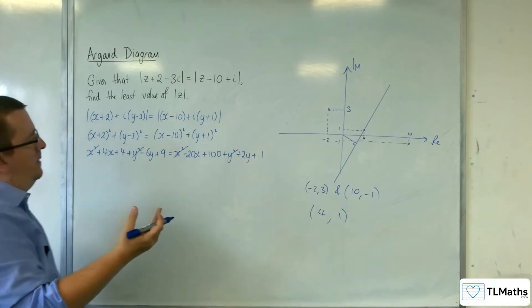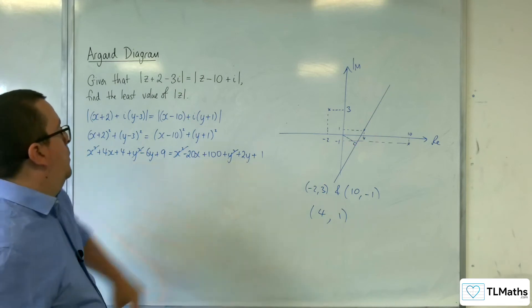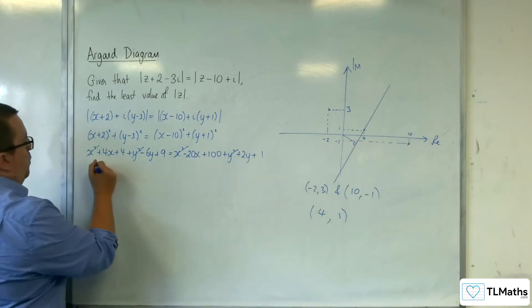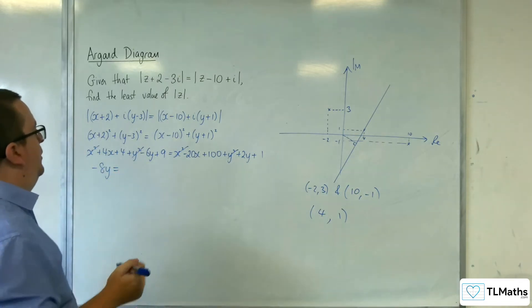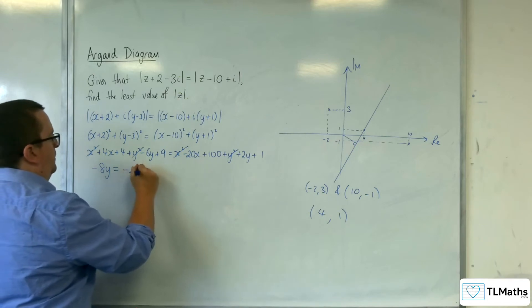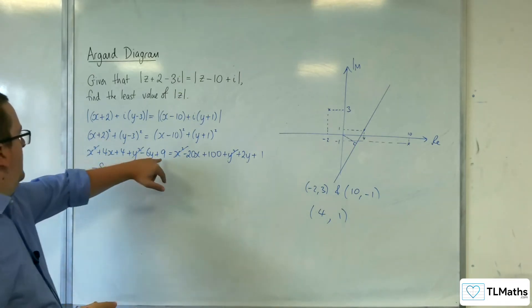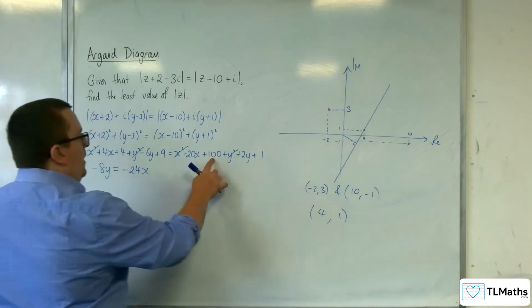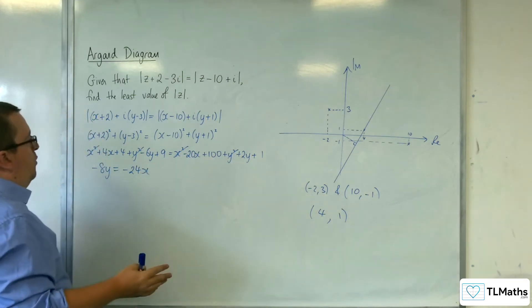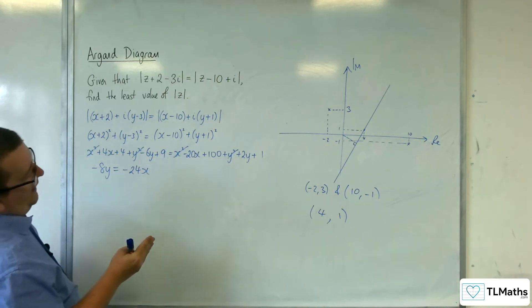Let's get the y's onto the left-hand side. So we've got the minus 6y take away 2y, so minus 8y. Everything else onto the right-hand side. So we've got the minus 20x take away 4x, so minus 24x. We've got 4 and 9, so 13. We've got 101. So 101 take away 13 will get us down to 88.